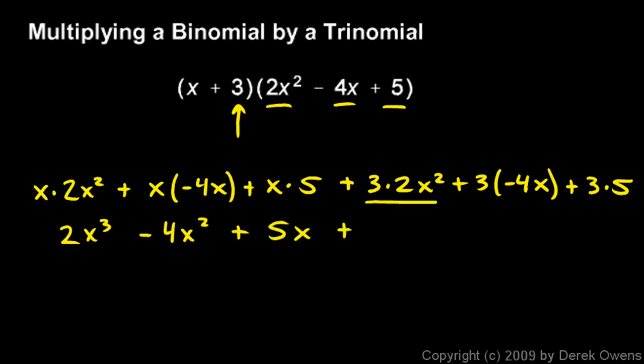And right here I have 6x squared. And here I have a negative 12x. And then the 3 times 5 is 15. Okay, let's combine like terms.